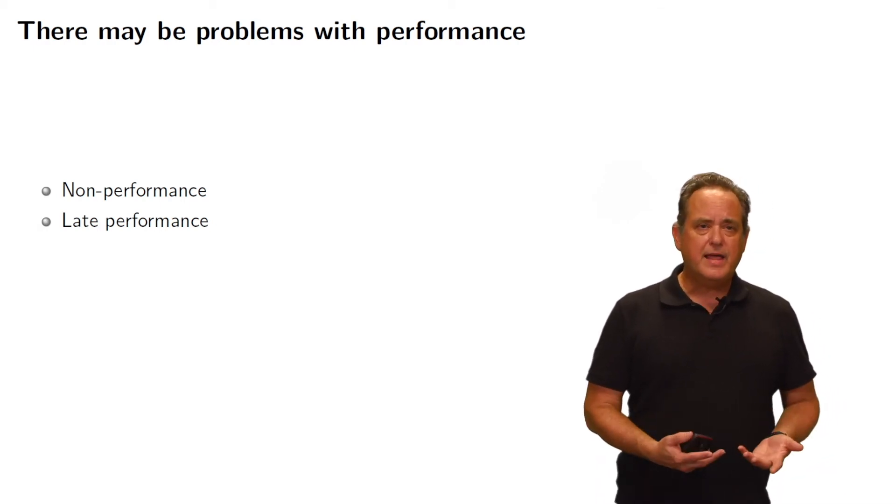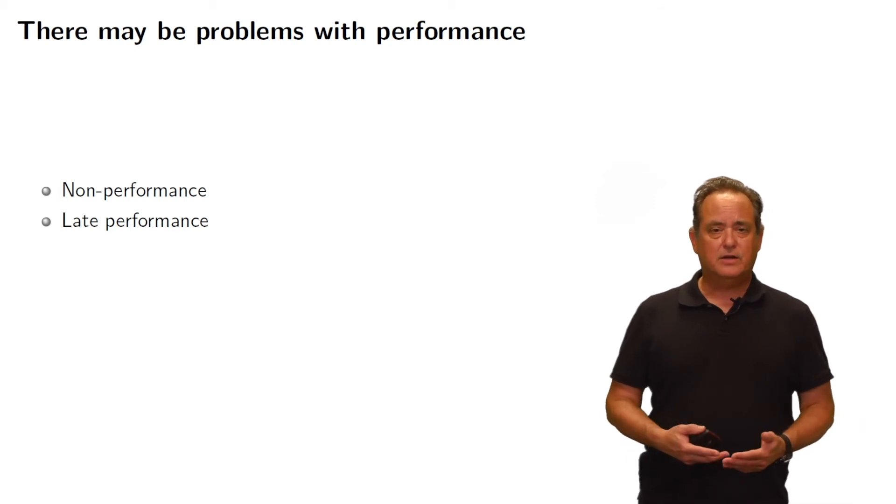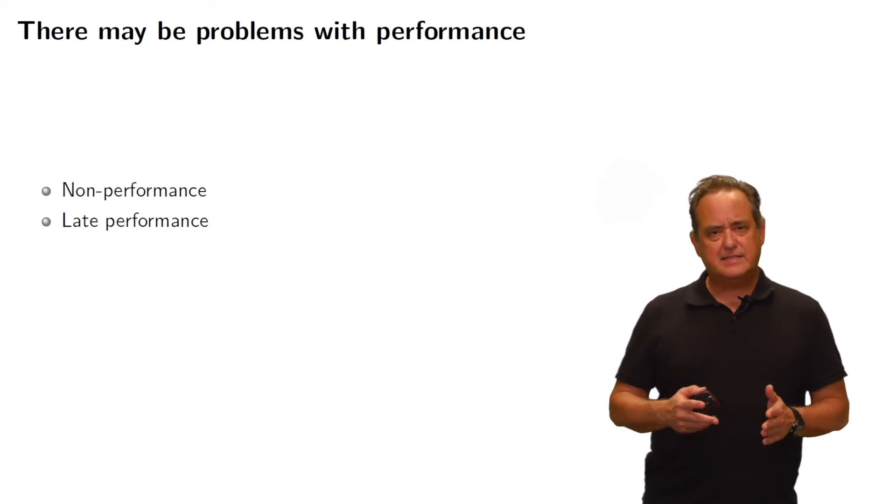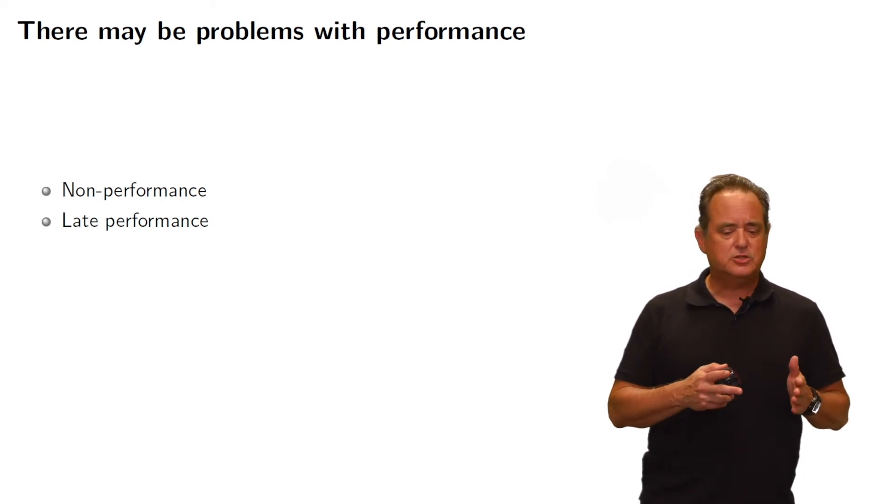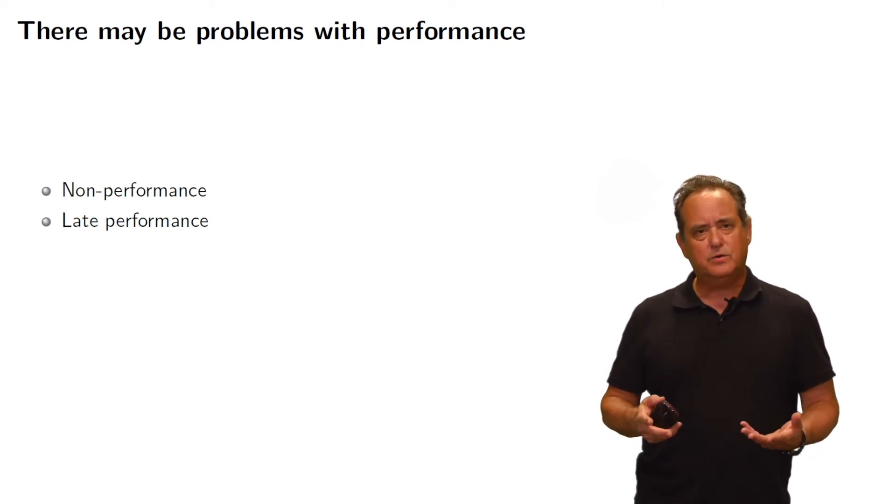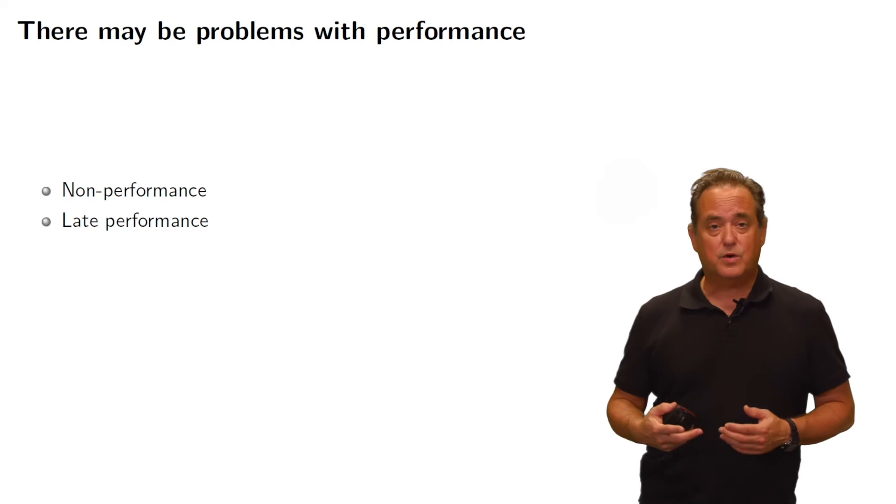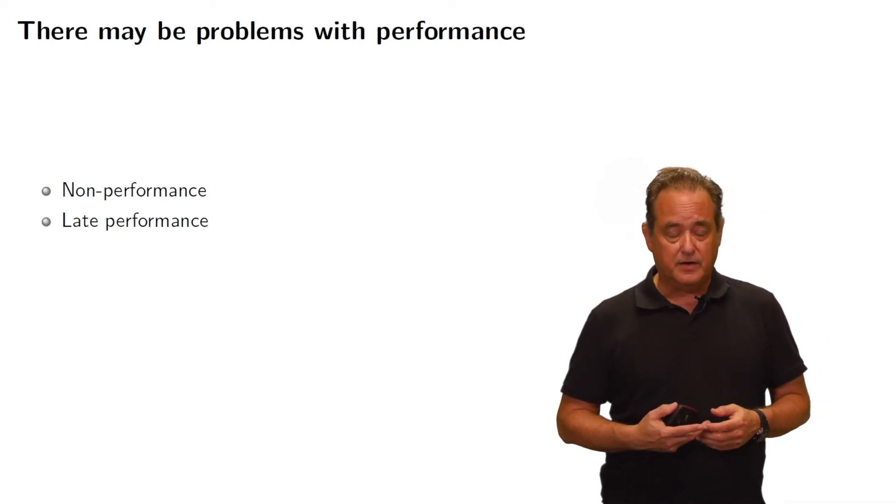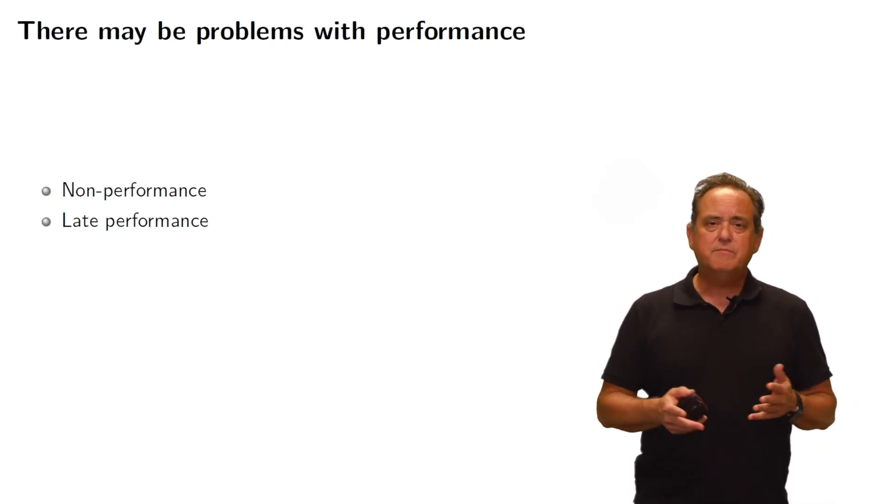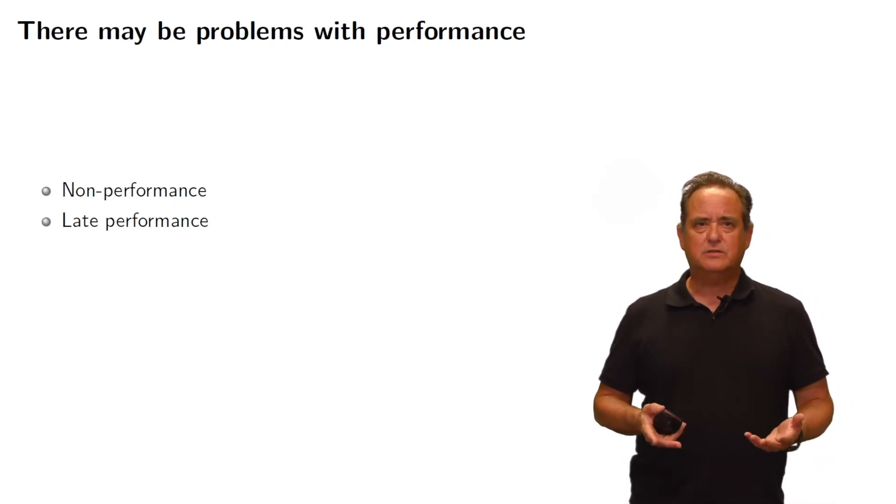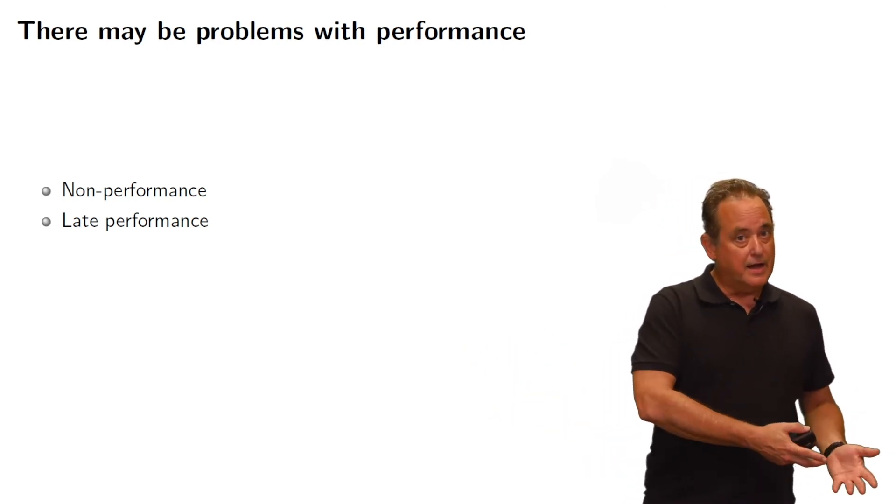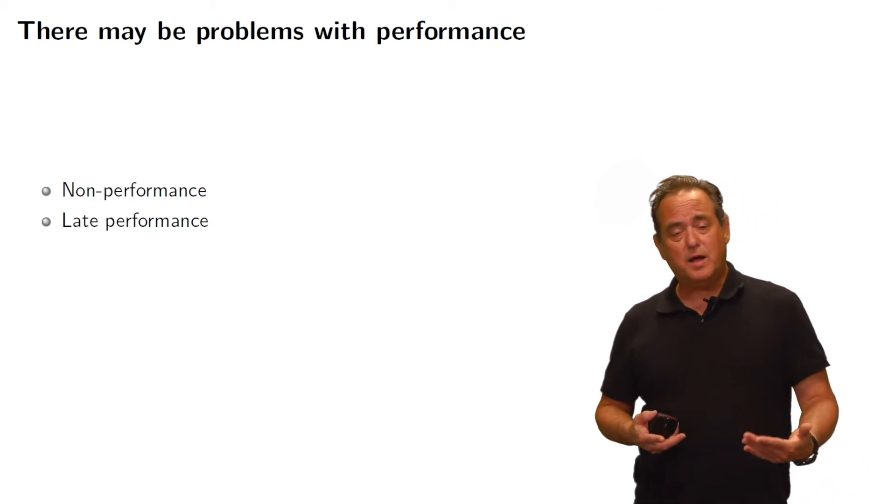There could be a problem with late performance. If I own a company that sells Halloween costumes, and my market for selling those costumes is essentially the end of August through the middle of October, that's my window. And I contract for the purchase of costumes, and those costumes don't arrive until October 1st, well, I've missed an entire month of sales. So even though the seller eventually performed, it was a late performance, and therefore, there's problems with that.